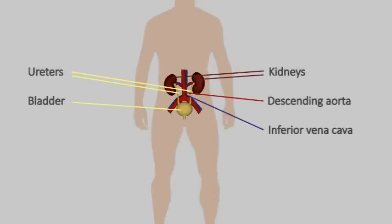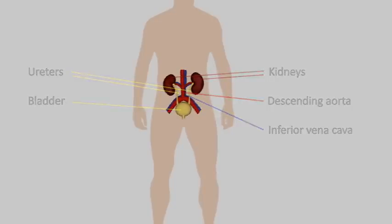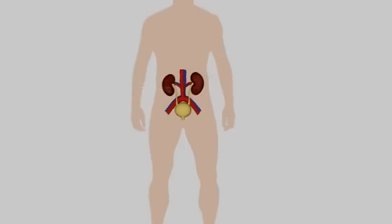The two kidneys are bean-shaped organs which are located close to the back. Each kidney receives blood flow from the renal artery which branches off the abdominal aorta, the main artery which runs down the centre of the body.